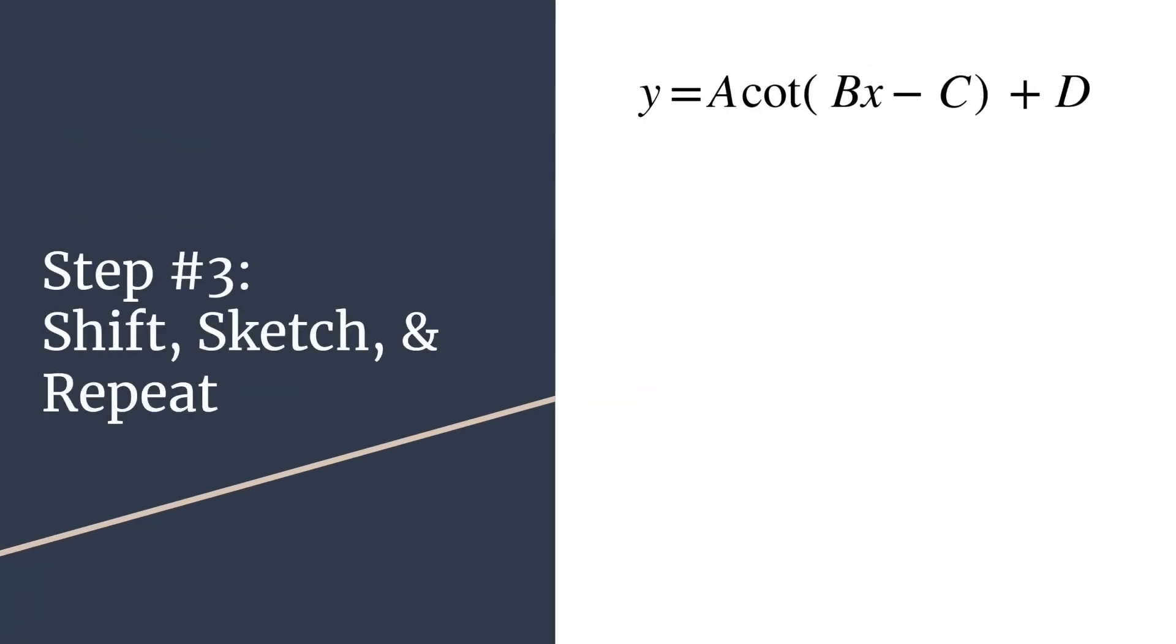In step three, we'll take care of the shifts. We'll sketch in our cotangent curve, and then we'll repeat. So remember that our shifts are C over B for the phase or horizontal shift. So you'll just move left or right, however many units that indicates. Our vertical shift is D. You'll move up or down the corresponding number of units. You'll sketch in the cotangent curve, and then you'll repeat.